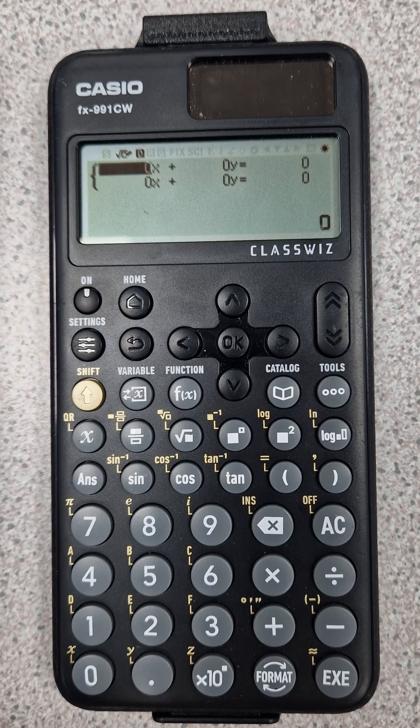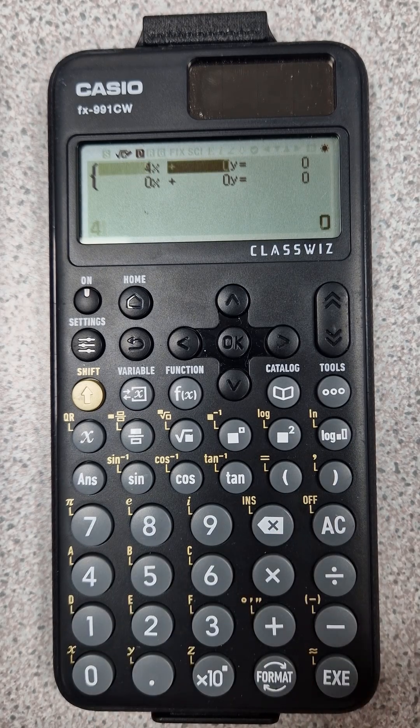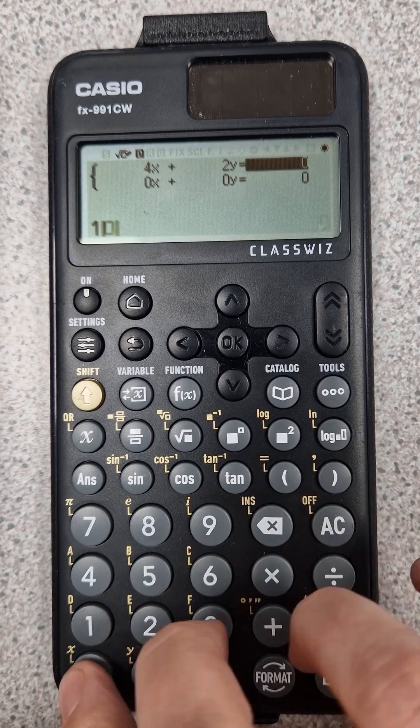So I've got 4x plus 2y equals 10. So here, 4, 2, 10.